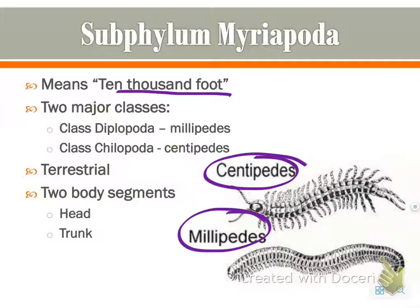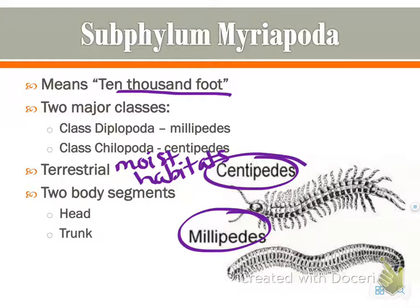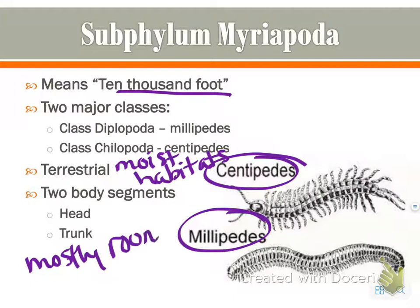They are terrestrial, although they do require moist habitats because they don't have an exoskeleton. They can't keep water inside their bodies — they don't have that waxy covering on the exoskeleton like other animals do, so they need to be in a moist habitat. They have two body segments: the head and the trunk. Millipedes are mostly round and roll into a ball when threatened — not roly-polies, but similar.